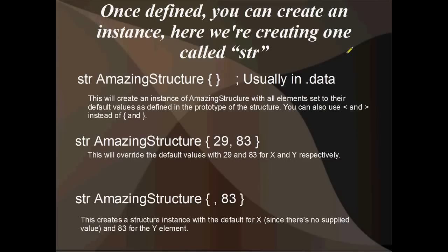Once defined, you can create an instance. Here we're creating an instance of the amazing structure defined on the previous slides, and this instance is called STR. The syntax for creating an instance is the name of the instance, then the structure name, and that's followed by curly braces. Inside these curly braces, you put the values that you want to override the original definition. This first one just here is going to use whatever the default values for X and Y was.